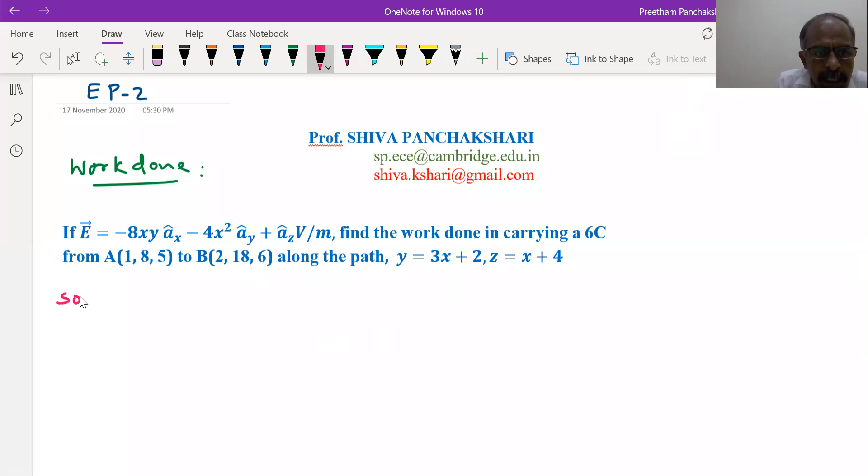So let us start with the given values. The electric field is given as minus 8xy a cap x minus 4 x square a cap y plus a cap z volts per meter.